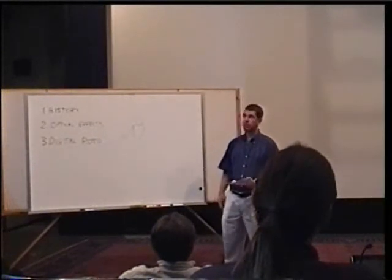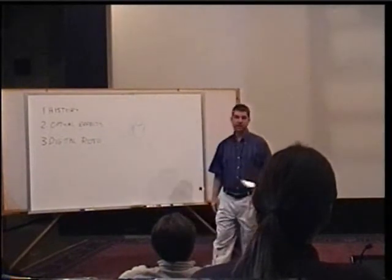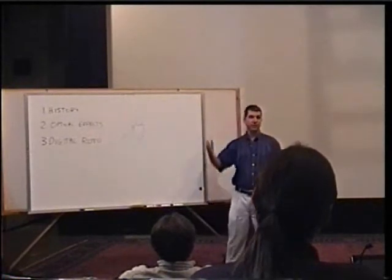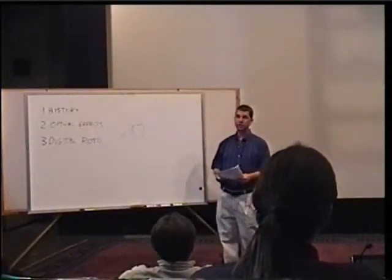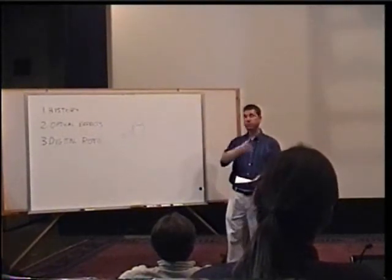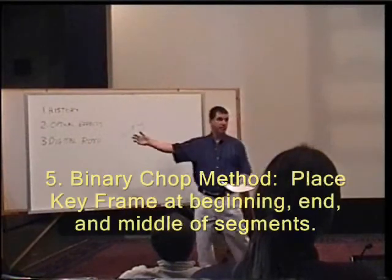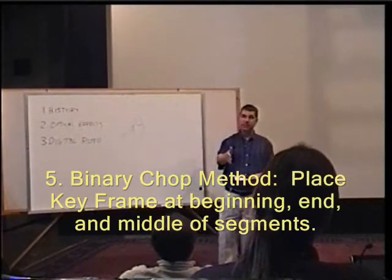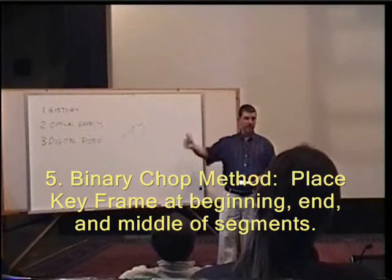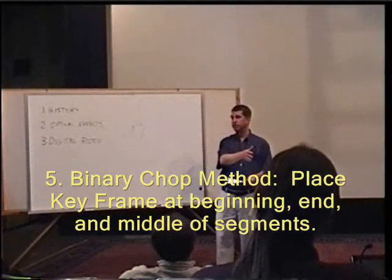Another way, I call it binary chop. It's actually, a binary chop is a sorting algorithm for sorting lists, you know, from an alphabetical order. But you can kind of use it for roto, where you put a keyframe at the beginning, keyframe all the way at the end, put one in the middle, and then you go to the middle of those two sections, put another keyframe.